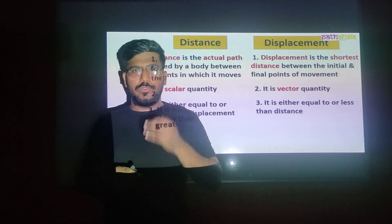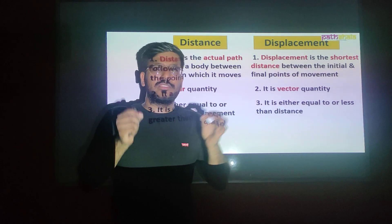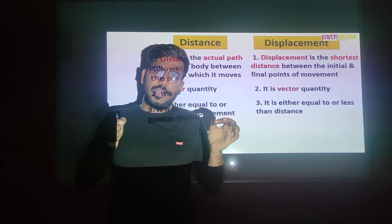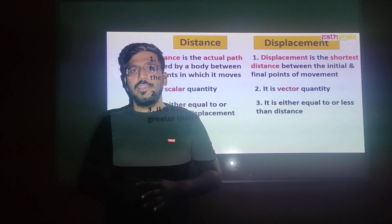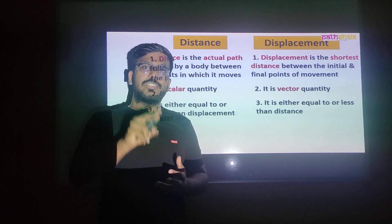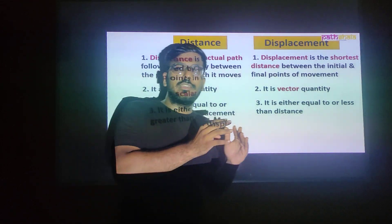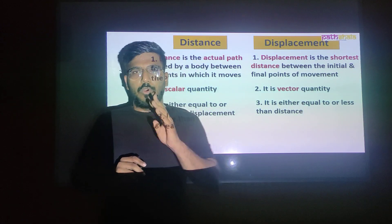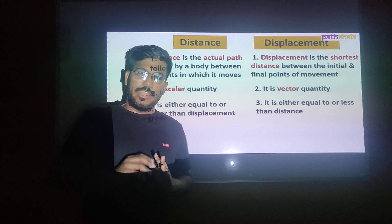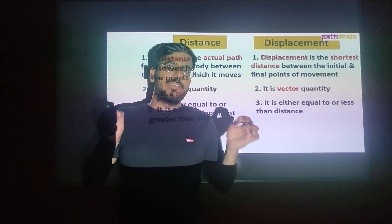When can they be equal? Distance and displacement will only be equal when the two points are in a straight line. Because the straight-line path from start to end is both the distance and the displacement. So whenever the object travels in a straight line, distance and displacement will be the same. Moral of the story: distance is always greater than or equal to displacement; it can be equal only when both points lie in a straight line.